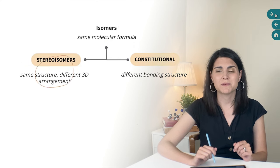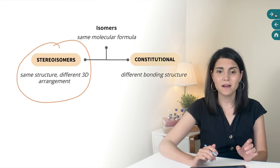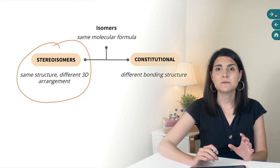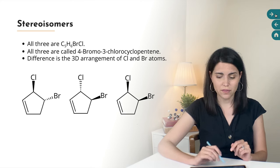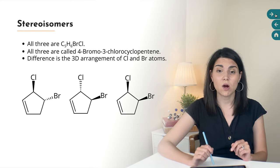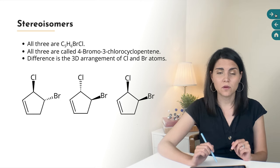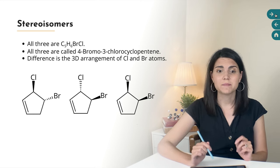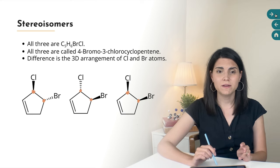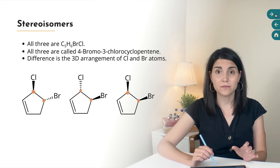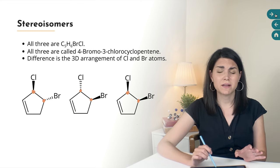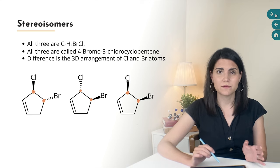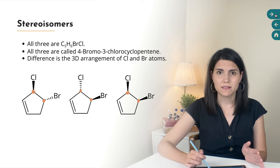Molecules that are stereoisomers have the same molecular formula and the same structure, but the arrangement of their atoms in 3D space is different. For example, all three of these molecules on the slide are stereoisomers. They're all called 4-bromo-3-chloro-cyclopentene. They all have the same molecular formula, and the bromine and the chlorine are attached to the same carbon atoms in all three molecules. The difference is that they're pointing in different spatial directions relative to one another and to the rest of the molecule. So these are stereoisomers.